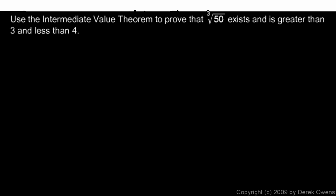In this problem, we're told, use the intermediate value theorem to prove that the cube root of 50 exists and is greater than 3 and is less than 4.